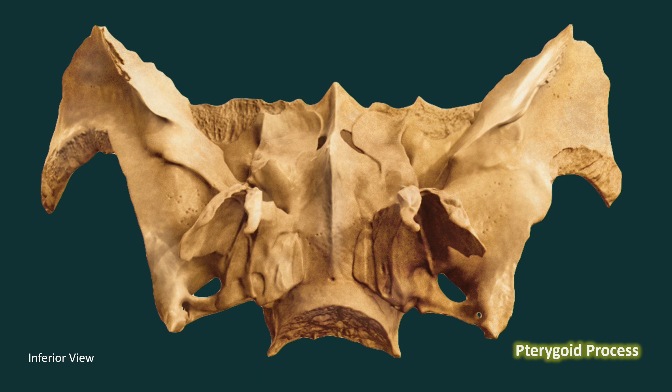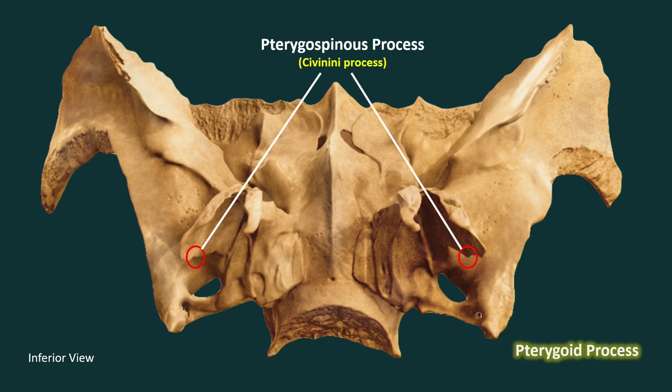The pterygospinous process, also known as the Civinini's process, is a sharp spine on the posterior edge of the lateral pterygoid plate of the sphenoid bone. The pterygospinous process is attached to the pterygospinous ligament and stretches towards the spine of the sphenoid.